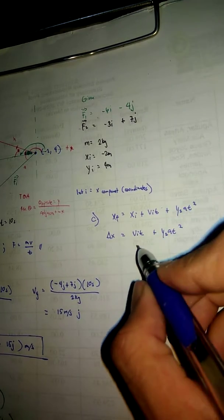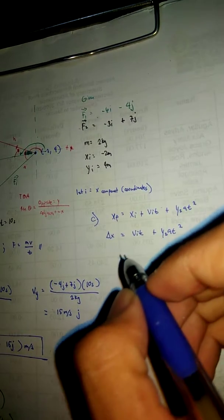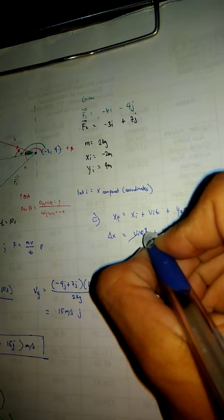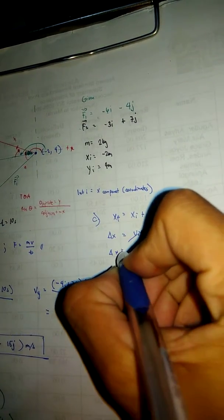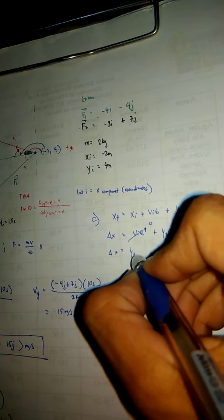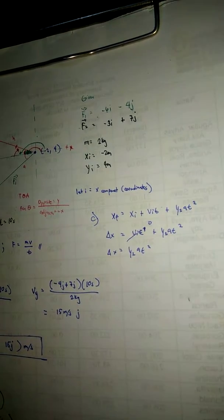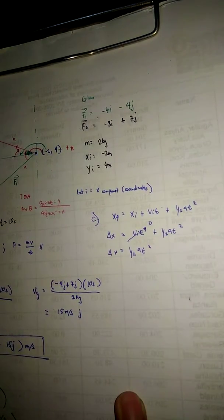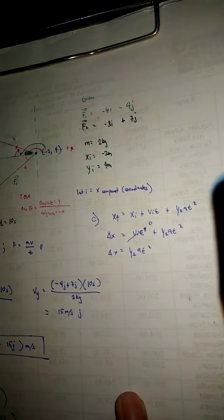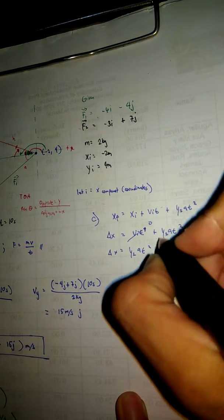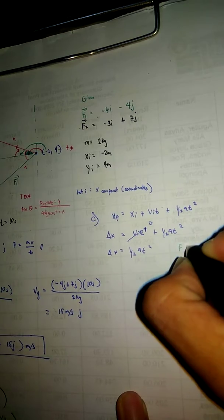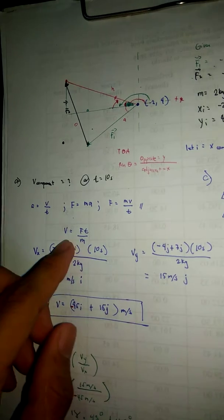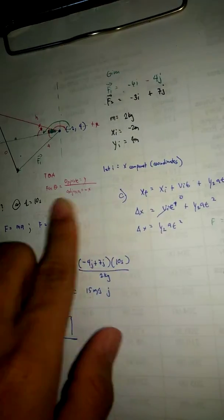Since the book said that it starts at rest, you could cancel this to zero. So delta X equals 1 half AT squared. What we just need to do is know the equation. We don't have the acceleration but we have the force and the velocity. F equals M over A. If we just transfer it, it would be A equals F over M.